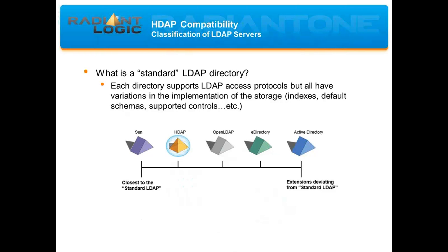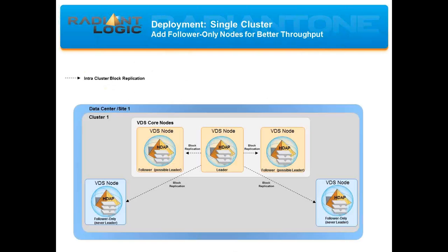When you look at the classification of some of the most well-known LDAP servers used today, each directory supports the LDAP access protocol but they all have variations in their implementation of the storage — in indexes, default schema, and supported controls. On the scale of LDAP directory implementations shown here, on one side we have the Sun directory, and on the other side we have Active Directory. For all intents and purposes, HDAP appears to clients as a standard LDAP directory and falls closer to the Sun side in terms of implementation. Most customer interest in using HDAP comes from those wanting to move away from Sun into something more flexible with better performance.